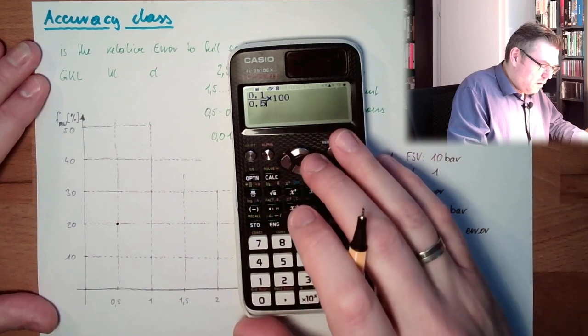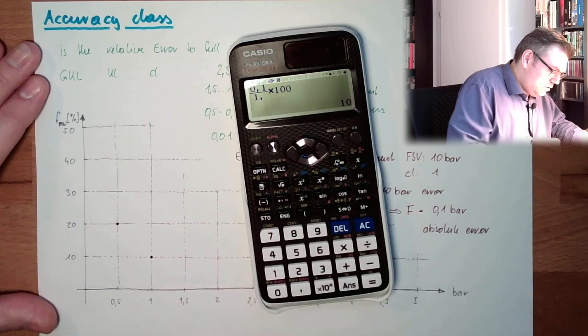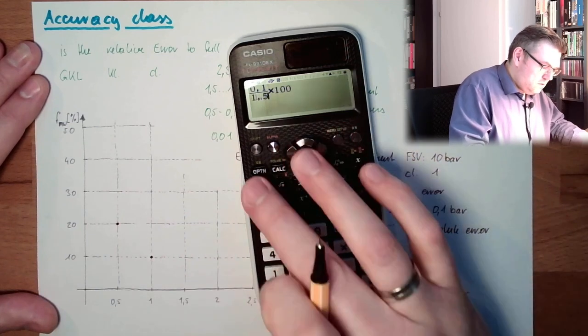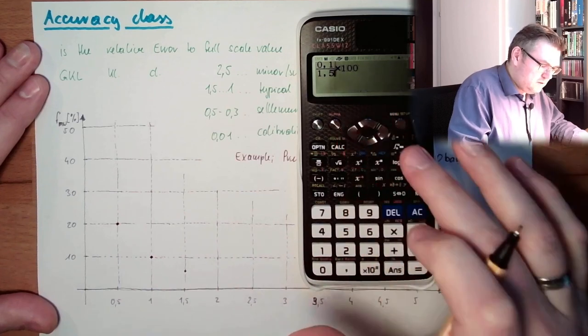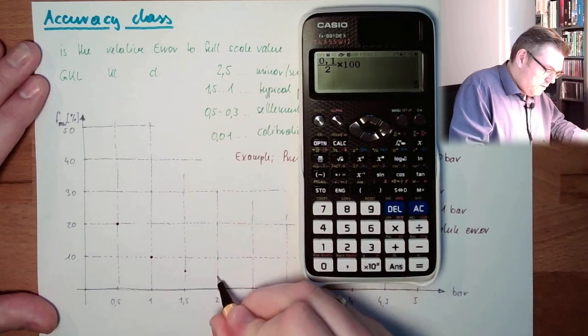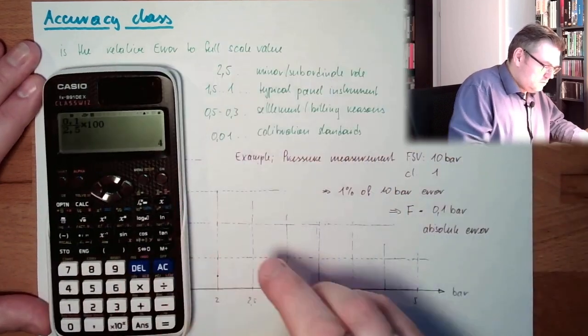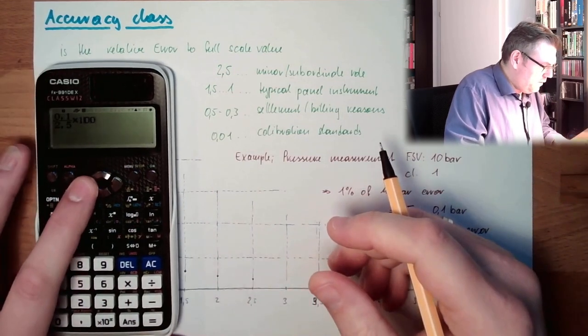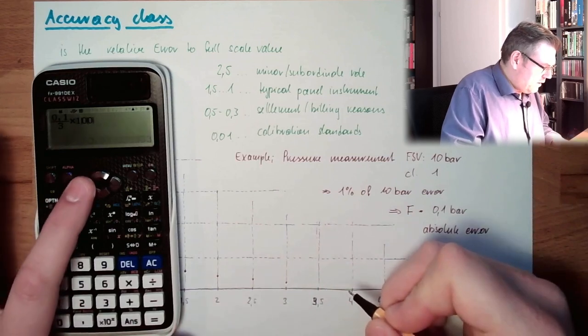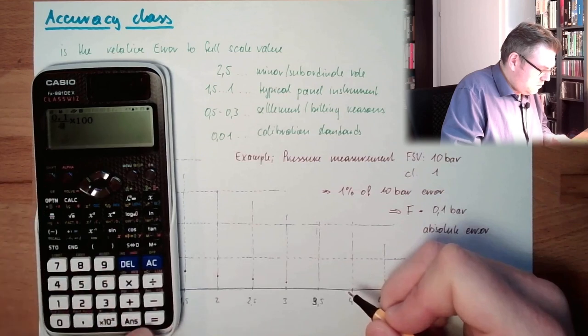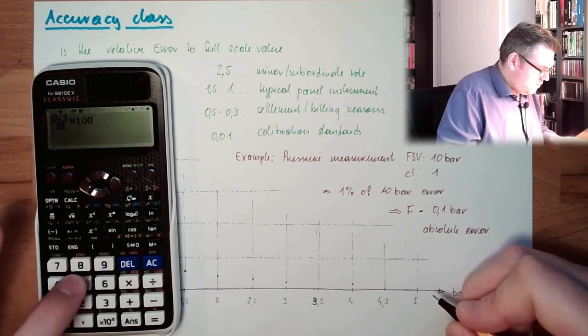How much do we do at 1 bar? 10%. At 1.5 bar, 6.6%. Here. At 2 bars, 5. At 2.5, 4. At 3, 3.3. And now I calculate already at 4, 2.5. And at 5, 2. Here we are constant.